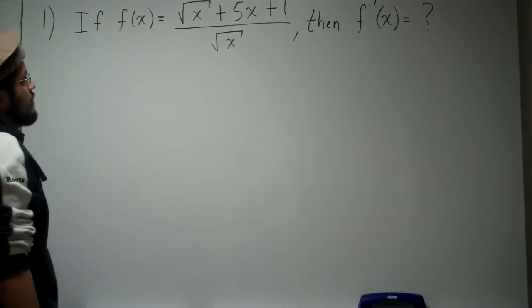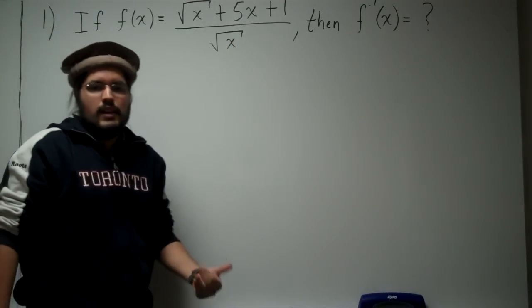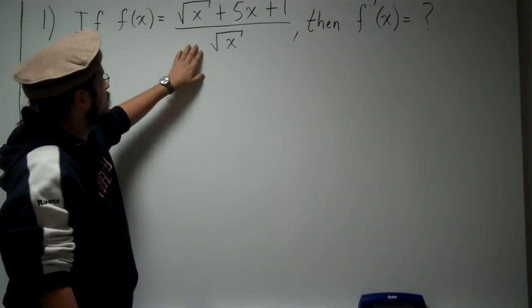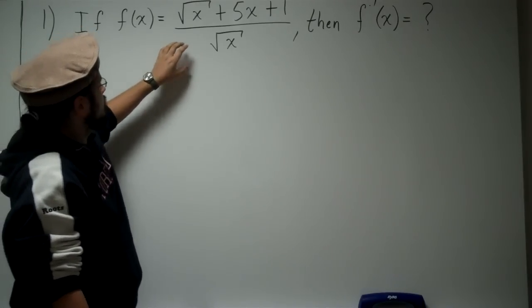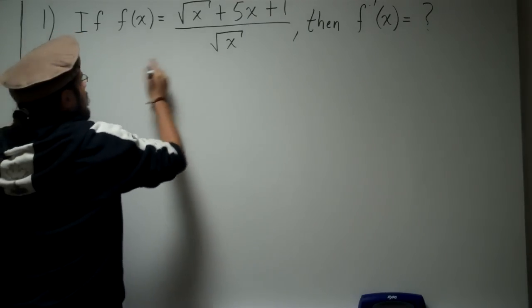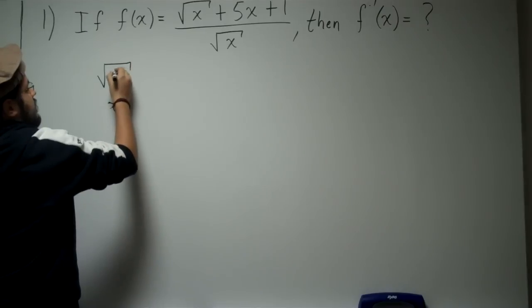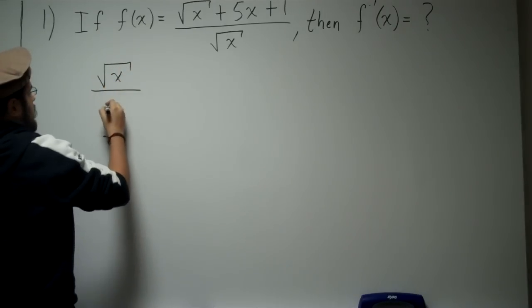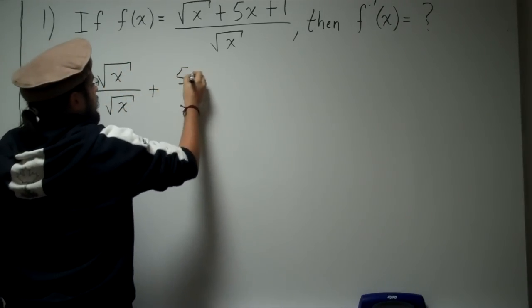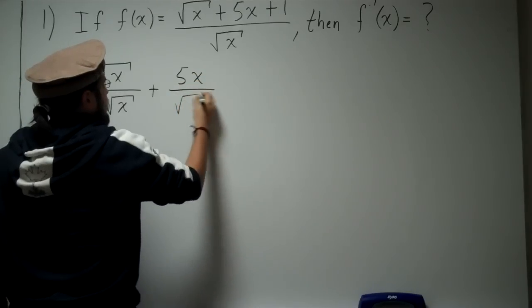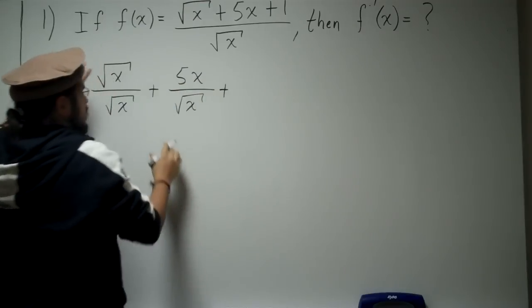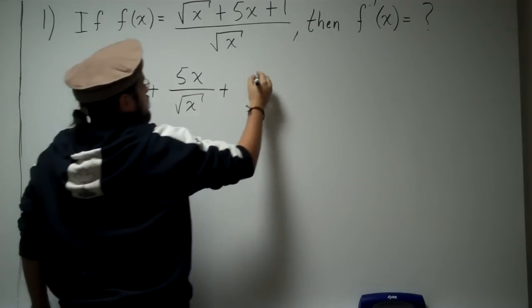So we can go ahead and approach this many different ways. You guys know the quotient rule, you also know the product rule, but I'm going to go ahead and approach this differently. I'm going to grab this and break this up — going ahead and breaking the fraction into three different fractions.